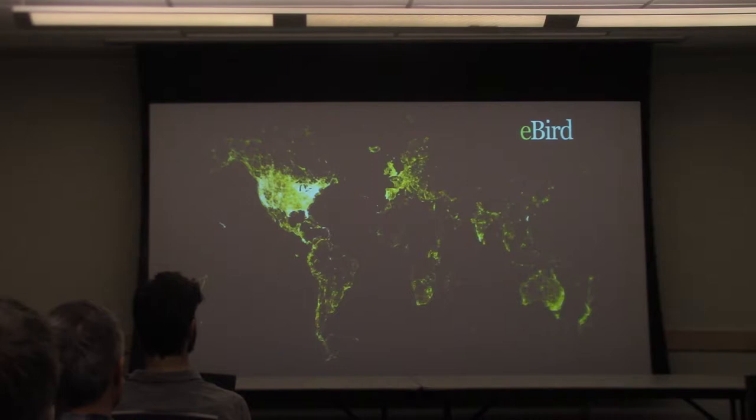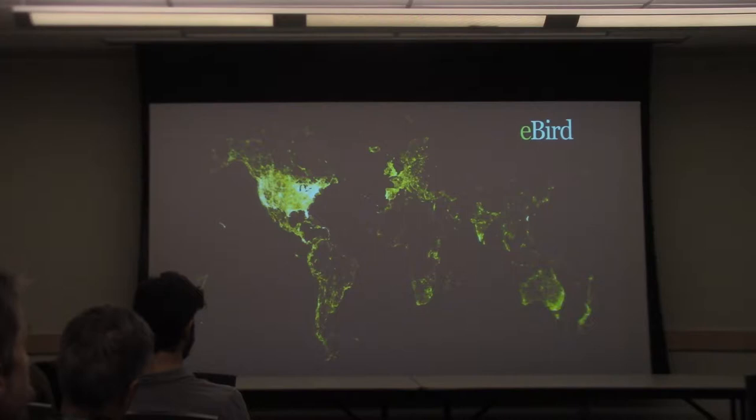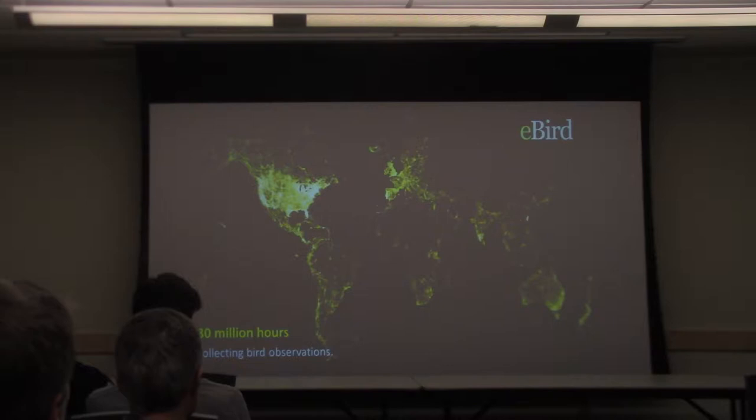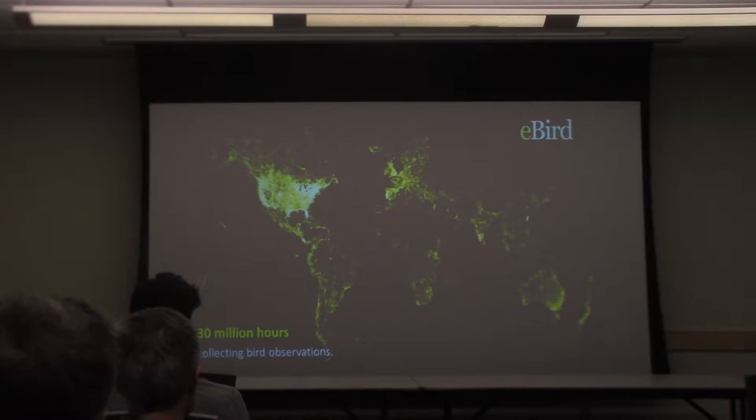What we're looking at here is not a map of the world — this is every eBird checklist through 2016 plotted against a black background. This represents over 30 million hours of collecting bird observations, that's about 3,400 years. eBird is a huge biodiversity database, and this map is about two years old, so there's much more data in there now.